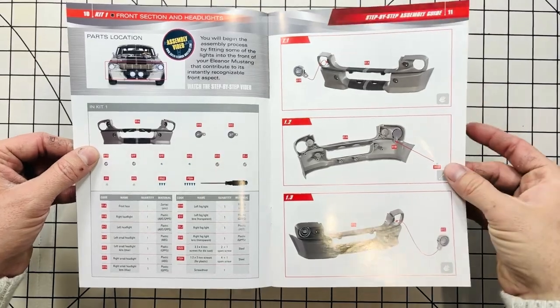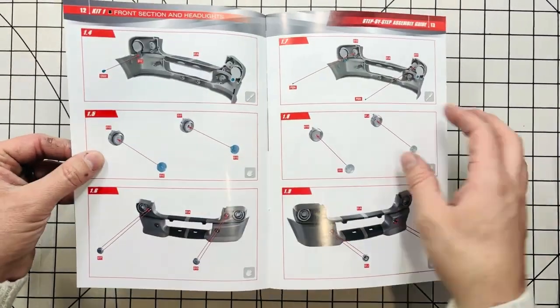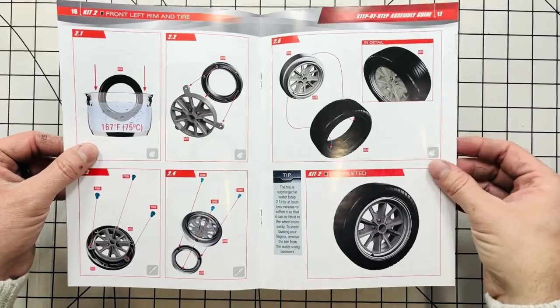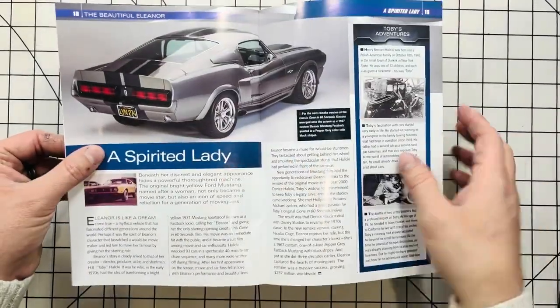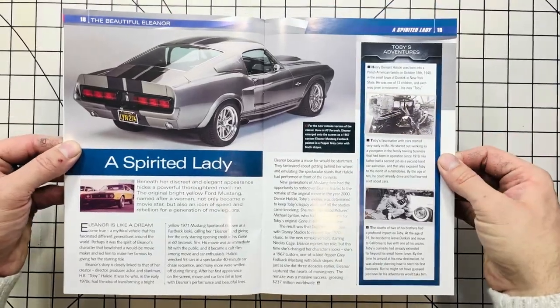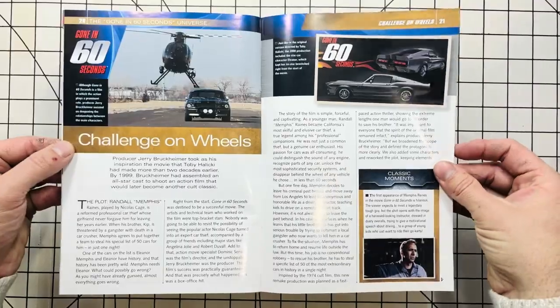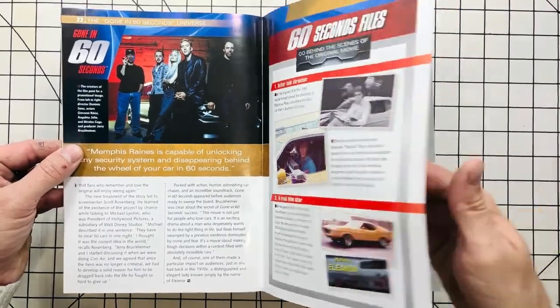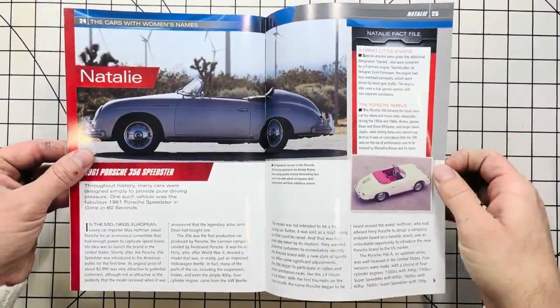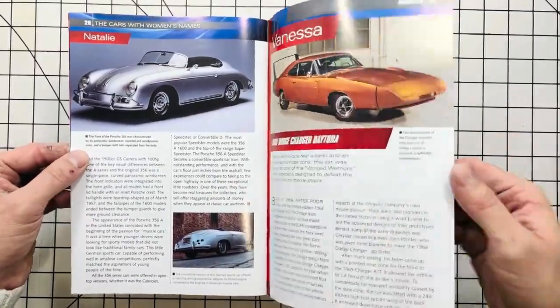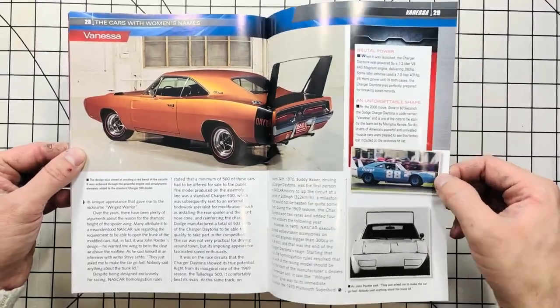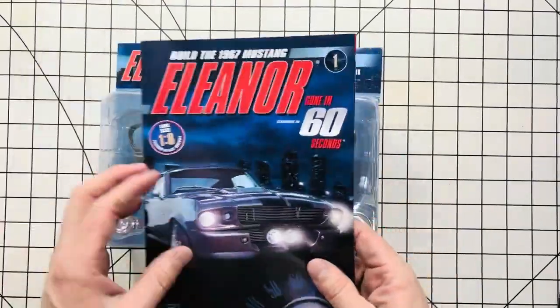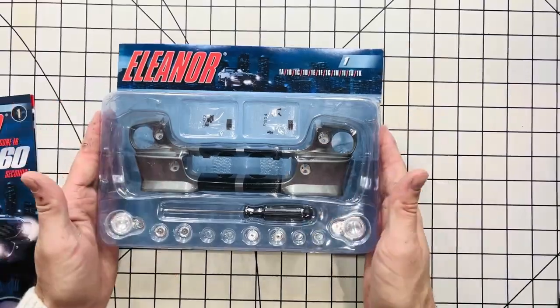And then it starts with your instructions on assembling your kit number one. That's the end of the book, so now let's go ahead. We're going to start by getting this open, laying out all the parts.